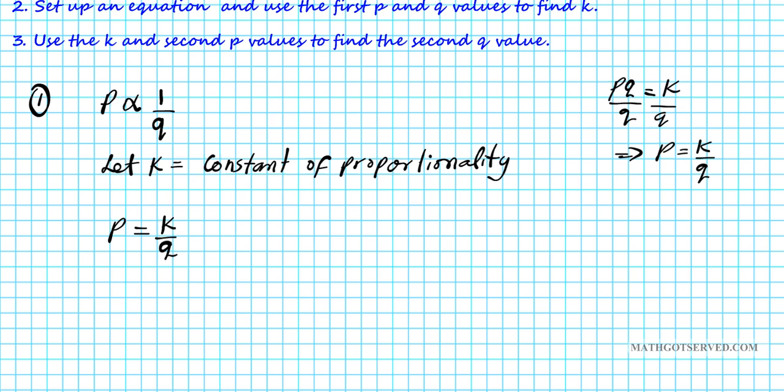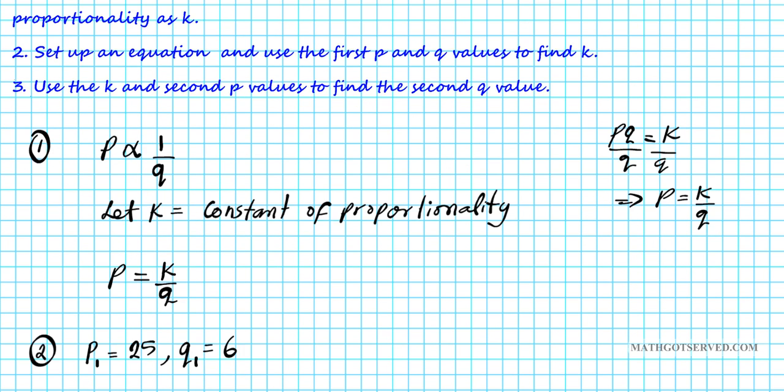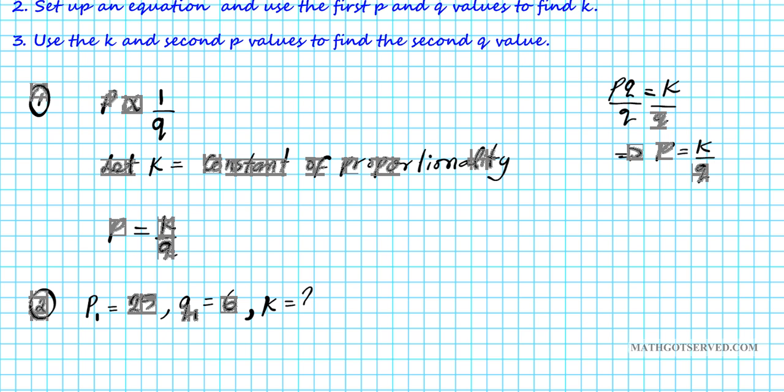Now, what we're going to do is we need to find what K is, because that's a constant of proportionality. That can help us find any Q given a P or any P given a Q. All right, so let's go ahead and do step two. We want to set up an equation. We know that the first P, let's call it P1, the first P was 25. The first Q, let's call it Q1, it was 6. So if P is 25 and Q is 6, what is K? K is question mark because we don't know what it is yet.